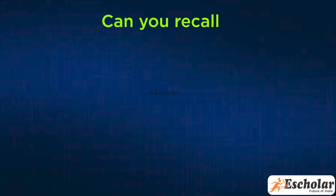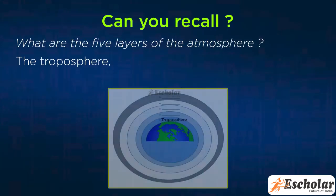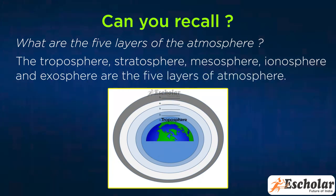Can you recall? What are the five layers of the atmosphere? The troposphere, stratosphere, mesosphere, ionosphere, and exosphere are the five layers of the atmosphere.